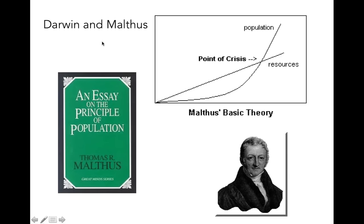Darwin also had influence through Thomas Malthus, who was another theologian and also an early statistician, who wrote a book entitled An Essay on the Principle of Population. In it, Malthus suggested that resources like food and clean water increase at a pace that is arithmetic — like a straight line — whereas population growth occurs at a geometric rate. At a certain point, if the population outstrips the potential for resources to be produced, there's going to be a crisis: a war, a famine, something where you can't have a population that exceeds the resources to sustain it.